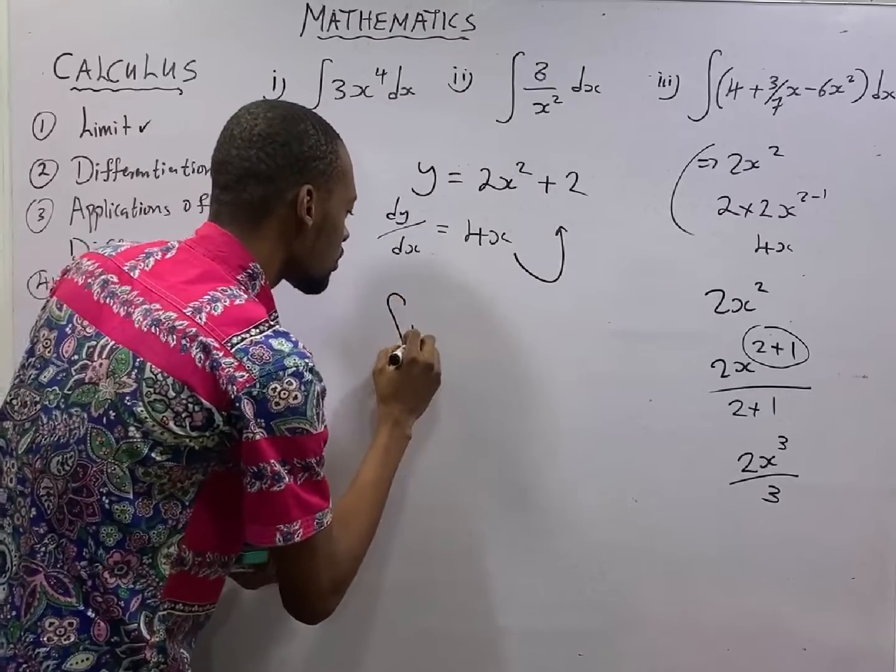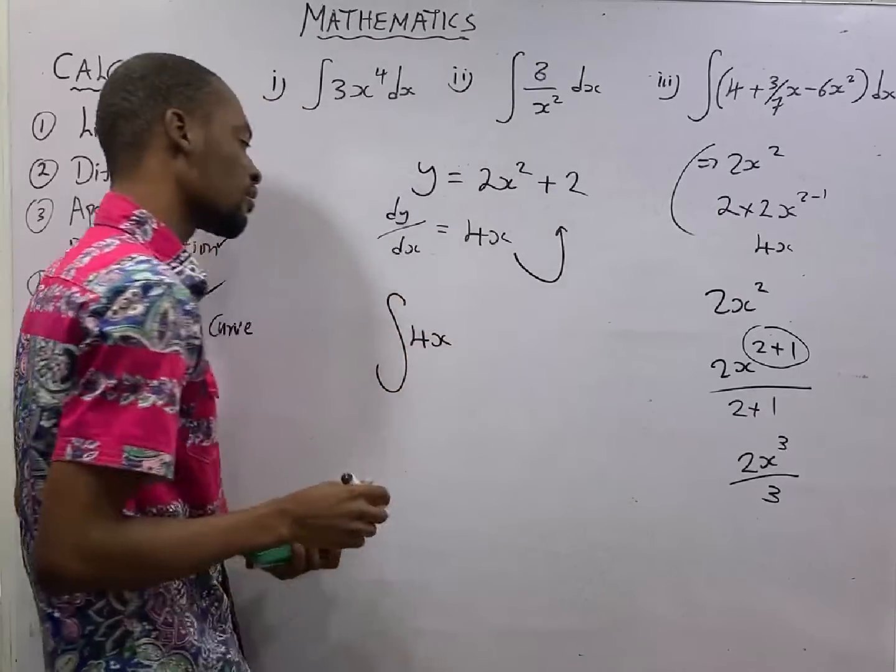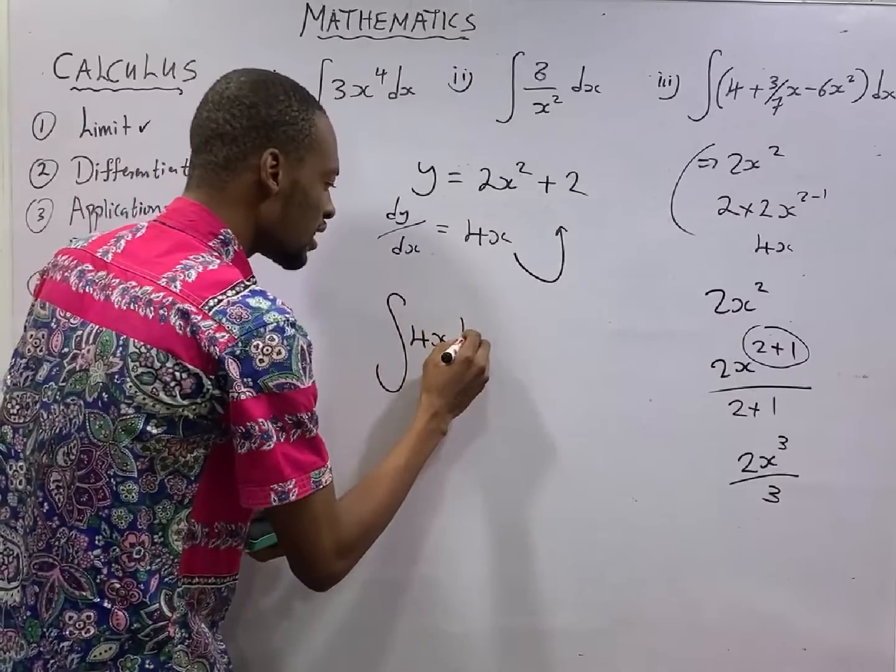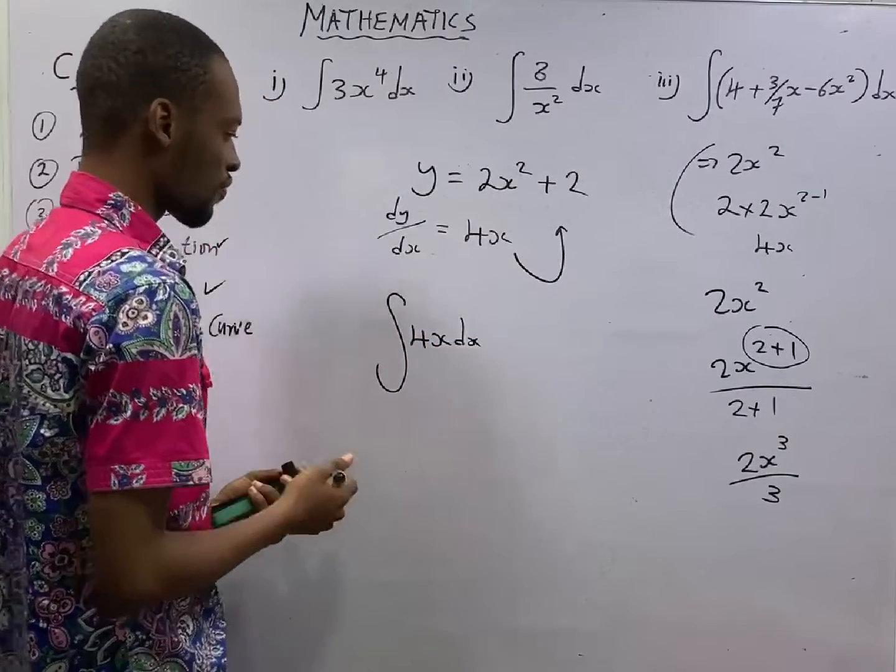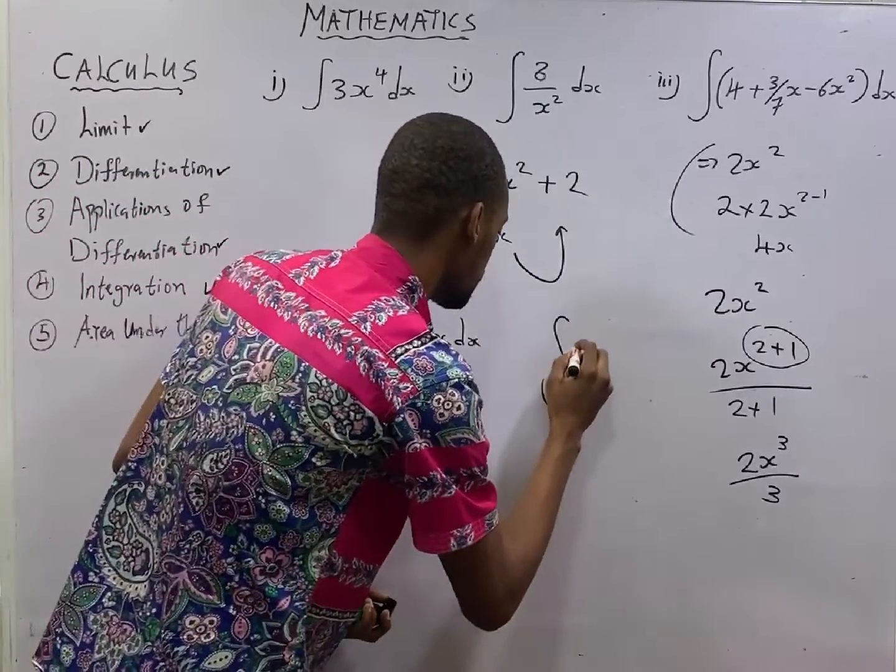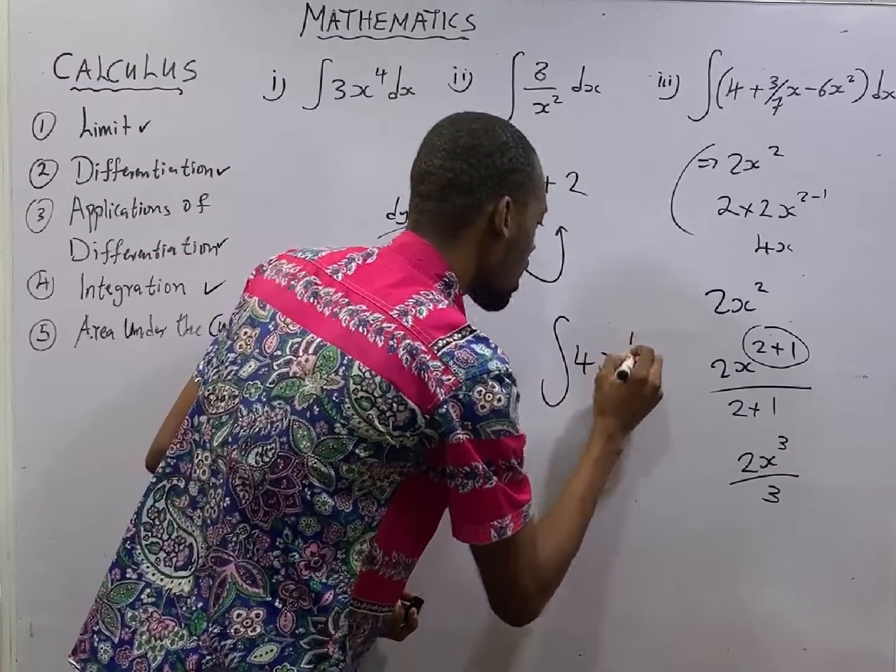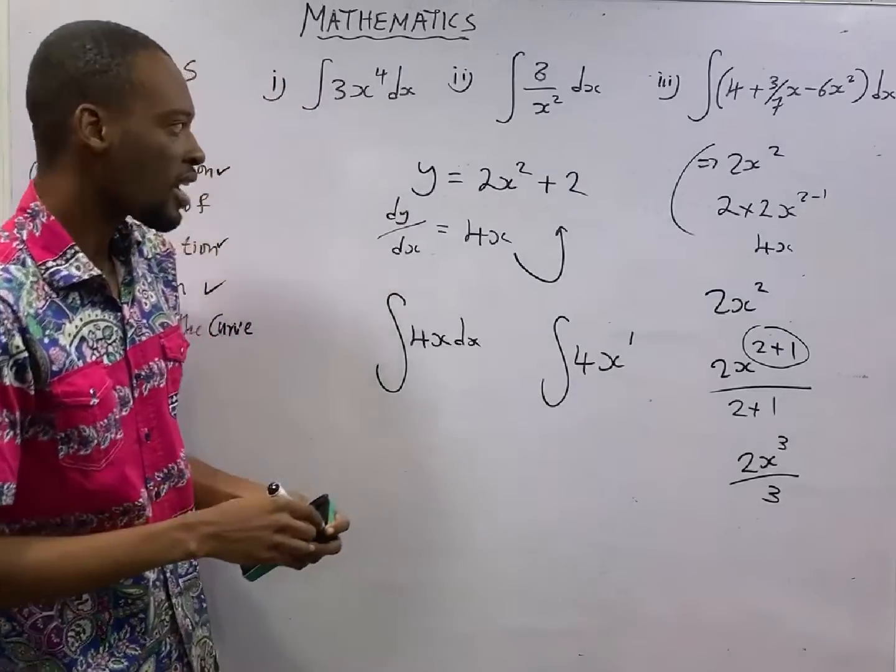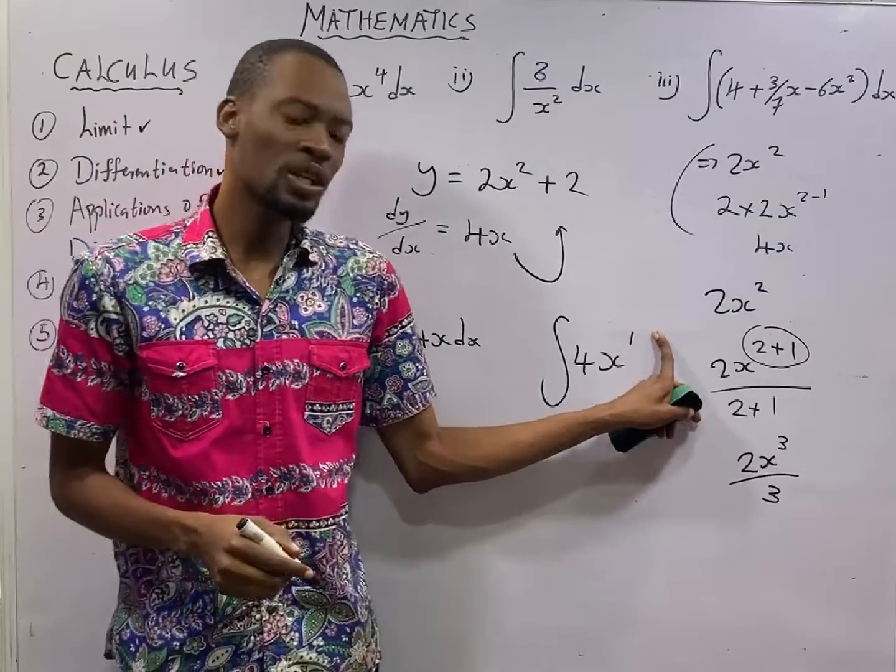You say, okay. Let's integrate 4x. You always add the dx to each equation. Once you integrate this, you know that this is the same thing as integral of 4x raised to the power of 1. And integration says, add 1 to the power.